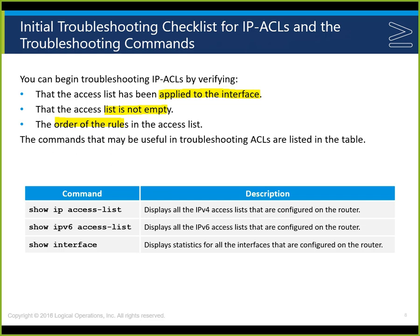For access control lists: begin troubleshooting by verifying the access list has been applied to the interface and in the correct direction. The list should not be empty — if it is, all we have is the implicit deny any. We still need at least one permit statement. The order of rules in the access list is significant — it's an ordered list. Be the packet: walk it down the access control list to see when one of the statements acts on it. Use 'show access-list' to see how many times each statement has been activated.